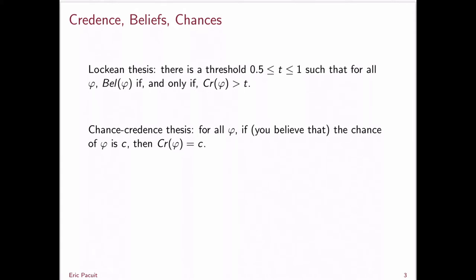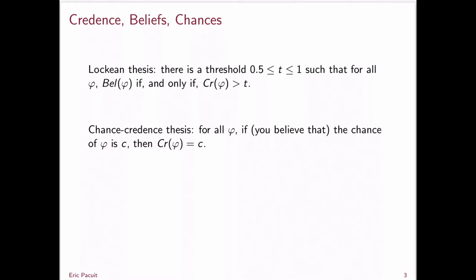There's also a way of connecting your chances to your credences — the chance-credence thesis, sometimes called the Principal Principle. It says: suppose you have good evidence that the objective chance of phi is C. Then your credence in phi should be C. This works out naturally — if you're flipping a fair coin and you know the chance it will land heads is 50%, that gives you reason to assign a credence of 50% to the proposition that the coin will land heads.